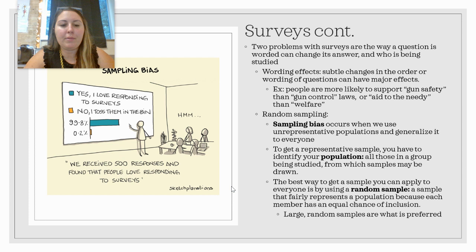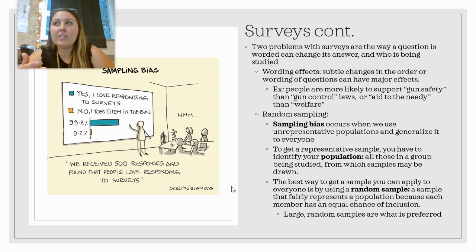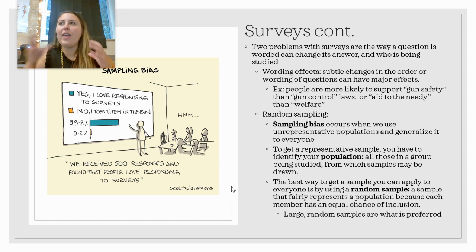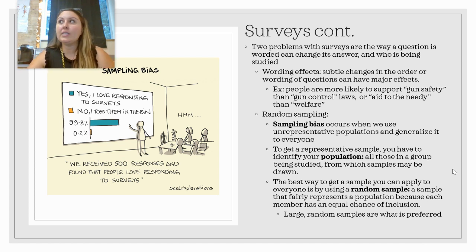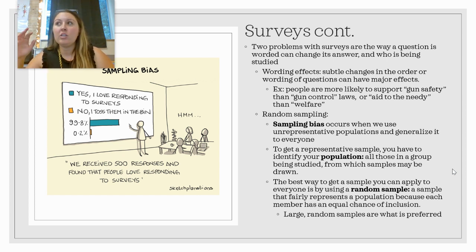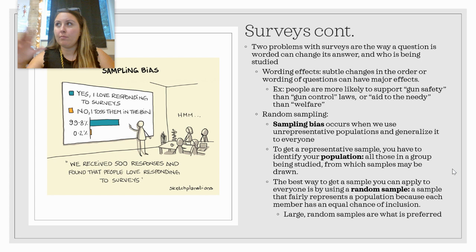There's a funny comic illustrating sampling bias: 'We received 500 responses and found that people love responding to surveys.' The reason that's sampling bias is that only people who like surveys responded — people who don't like surveys simply didn't respond. Generally, large random samples of at least 100 to 1,000 people is the gold standard. For example, to study Americans' opinions, I would want at least 1,000 people in a random sample from across the country.